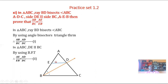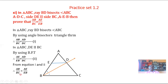The ratio AB over BC is equal to AD over DC from equation 1, and AE over EB is equal to AD over DC from equation 2. Since AD over DC is the same, therefore AB over BC is equal to AE over EB. Hence it is proved. AB over BC is equal to AE over EB.